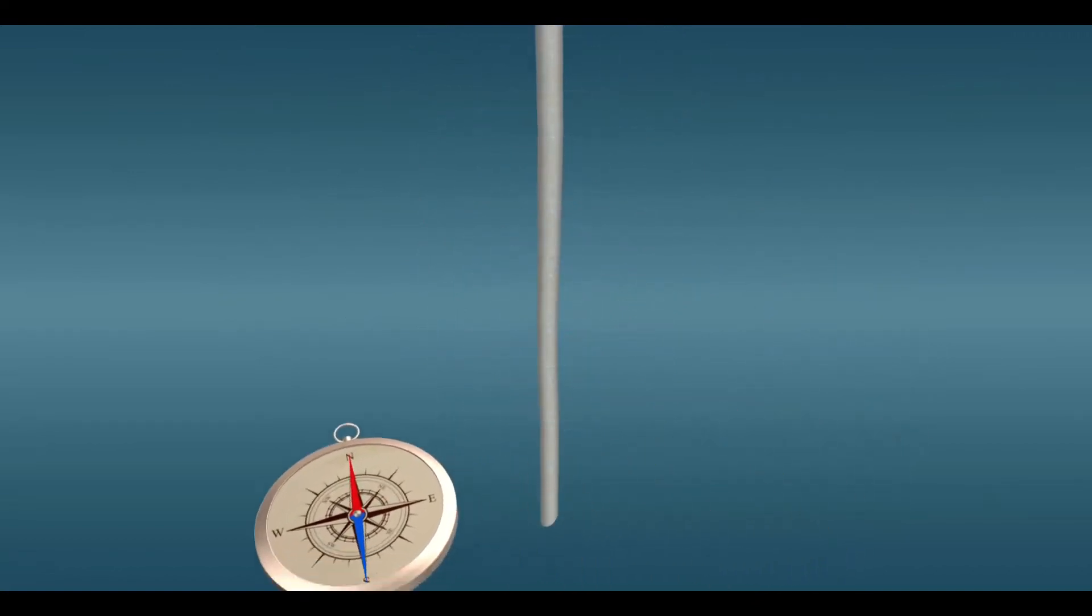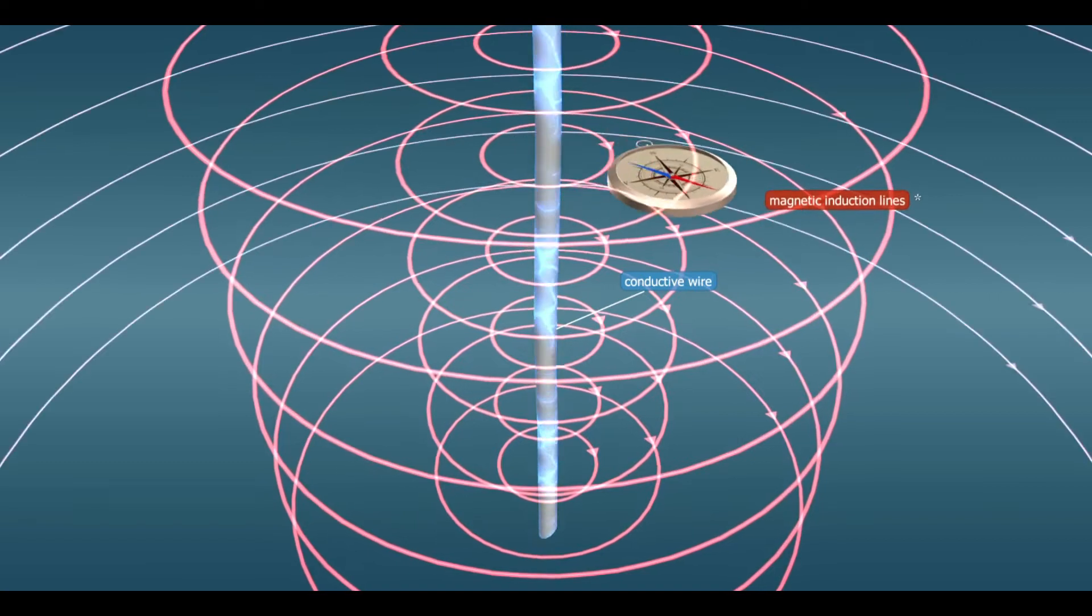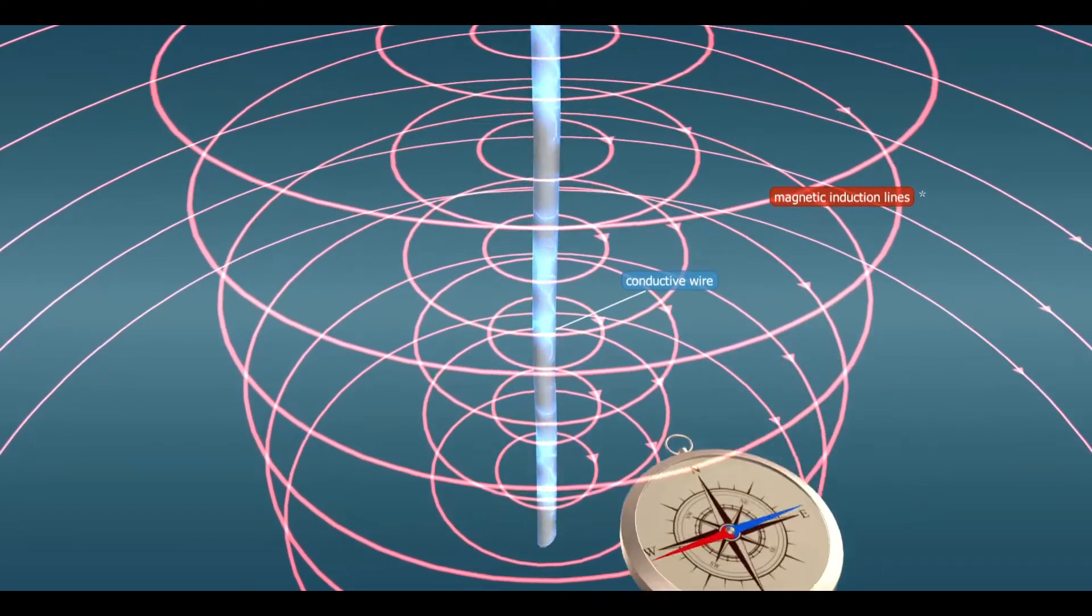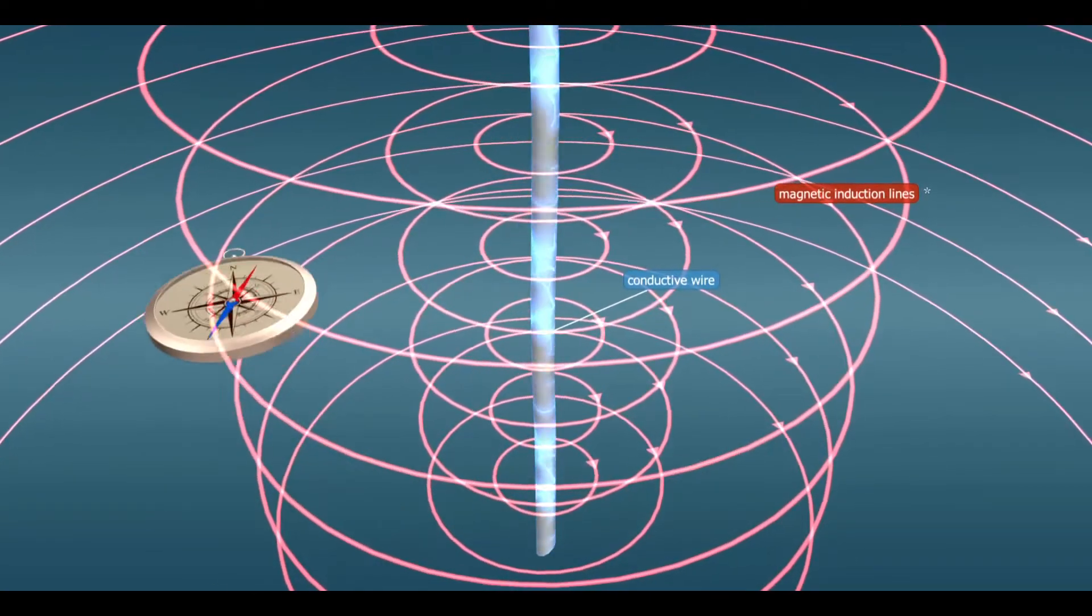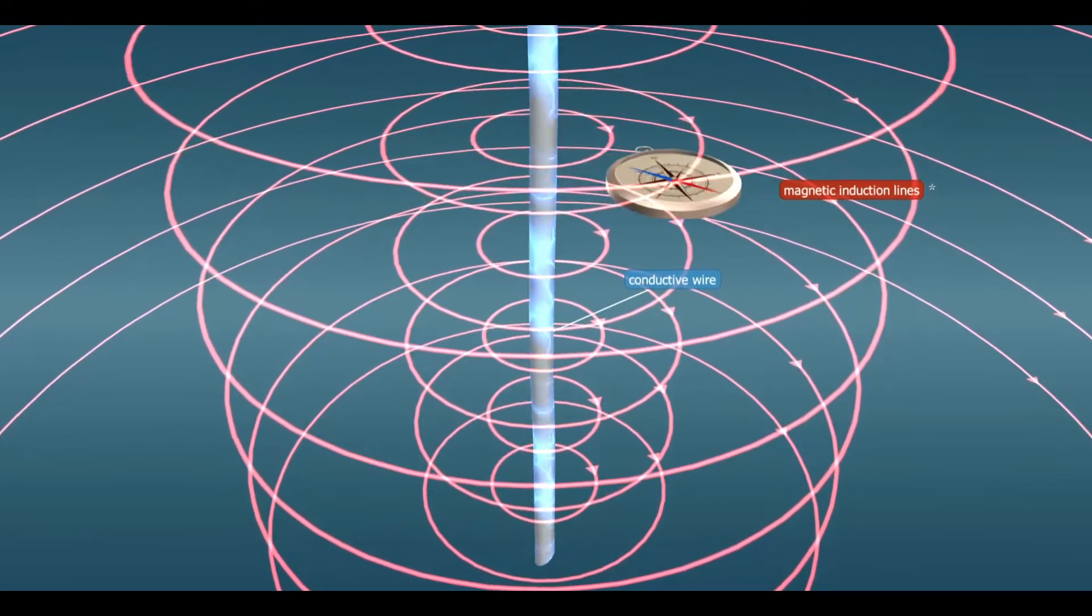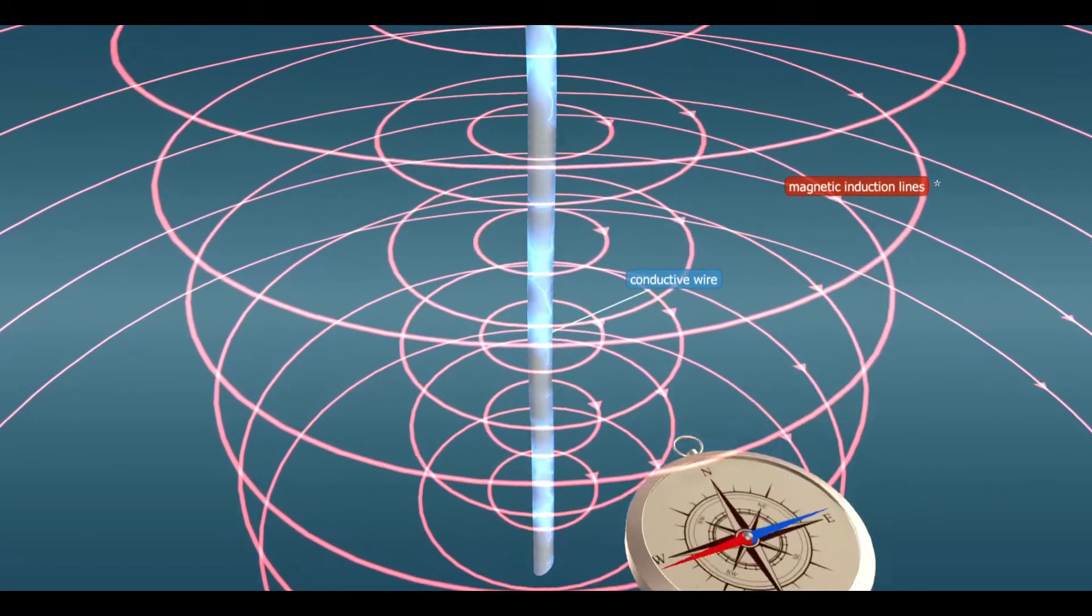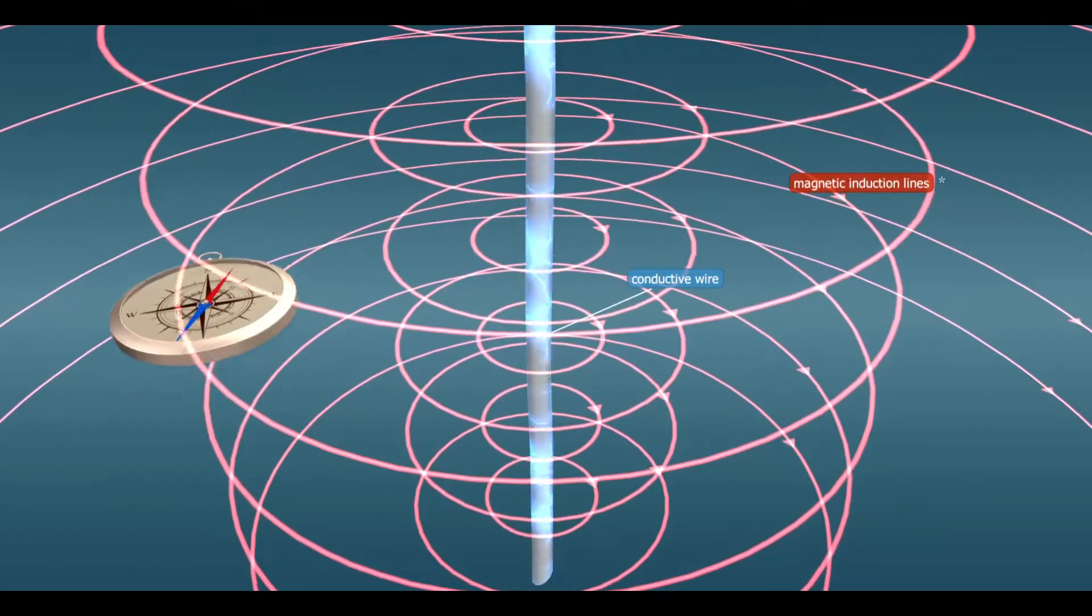When current flows in a wire, a magnetic field is induced around that wire. The strength of the magnetic field thus generated depends on the intensity of the current flowing in the wire and the distance from the wire.